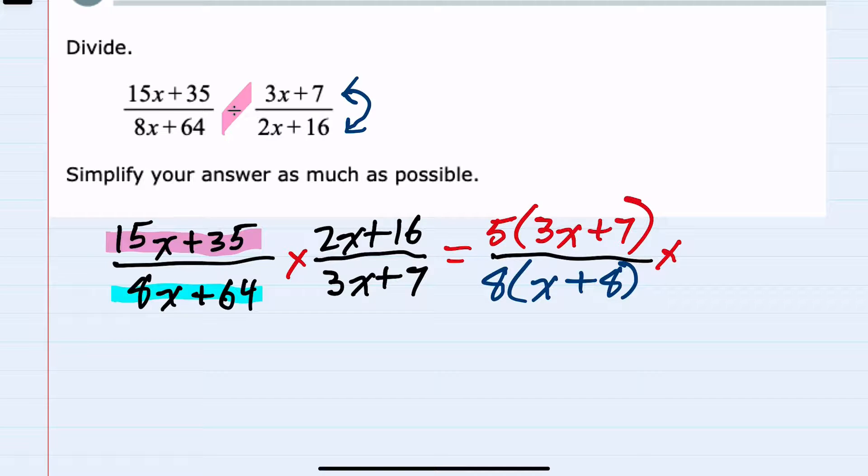For the second fraction, in the top we have 2x plus 16, meaning we can factor out a 2, leaving me with an 8 inside after factoring out the 2. And in that denominator, 3x plus 7, nothing factors out, so I'll just bring that over as 3x plus 7.